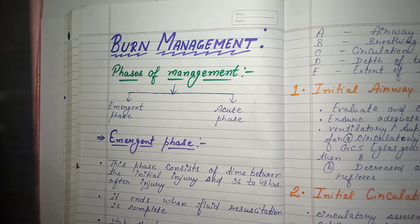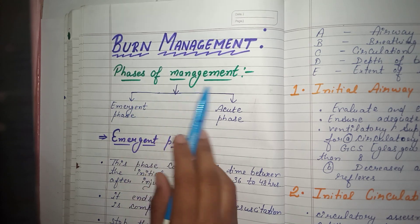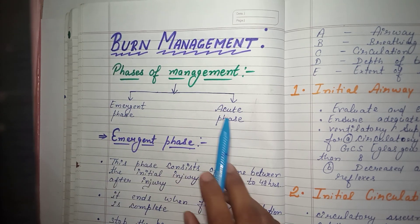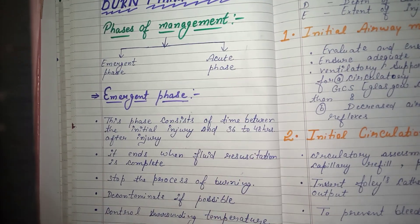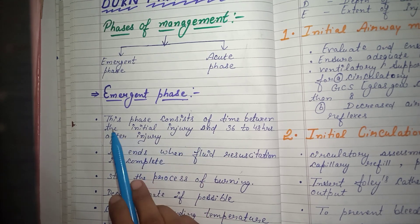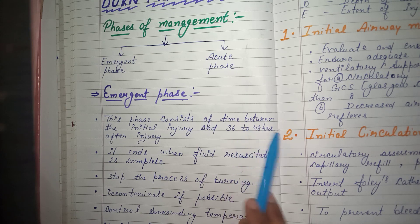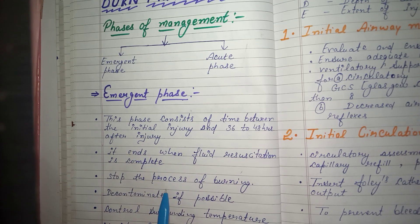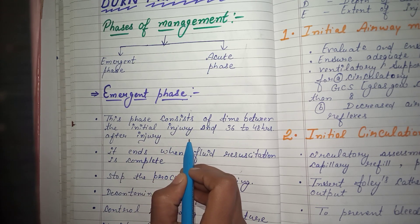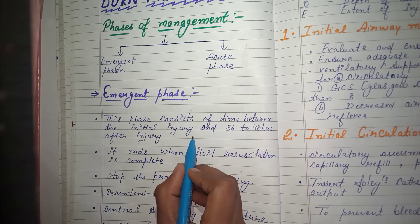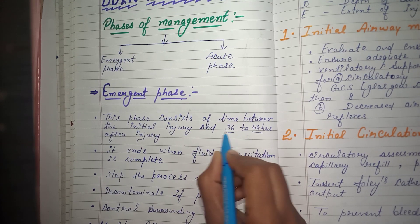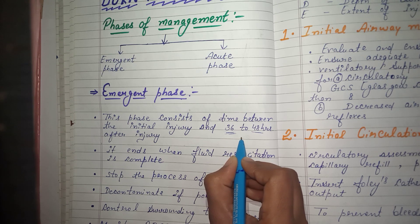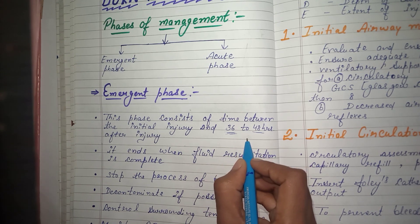Next is burn management, which has two phases: emergent phase and acute phase. The emergent phase consists of the time between the initial injury and 36 to 48 hours after the injury. Treatment given to the patient during this initial period falls under the emergent phase.